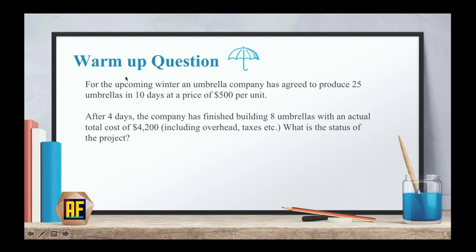Here is a warm-up question. For the upcoming winter, an umbrella company has agreed to produce 25 umbrellas in 10 days at a price of $500 per unit. After four days, the company has finished building only eight umbrellas, with an actual total cost of $4,200, including overhead taxes, etc. What is the status of the project?